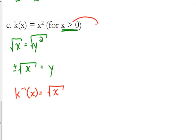If this had said for x is less than or equal to 0, then the inverse would have been the negative square root of x. Okay, and the inverse would have been the negative square root of x. But because it was x is greater than 0, it's just the positive part of it. All right.